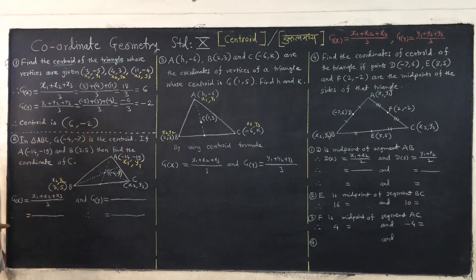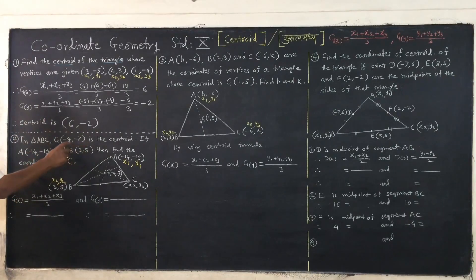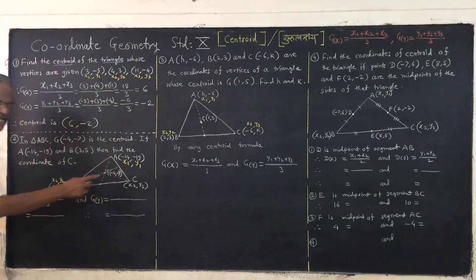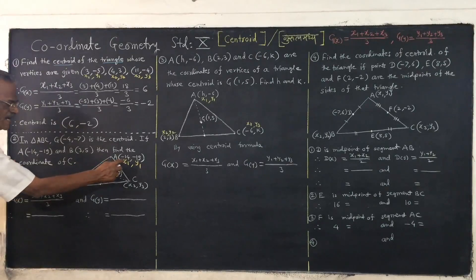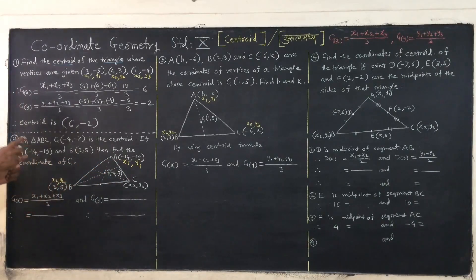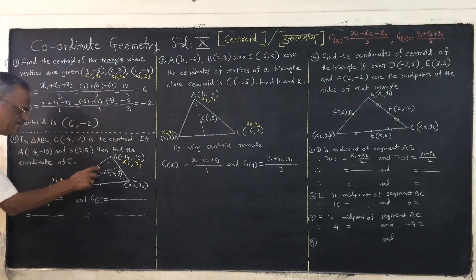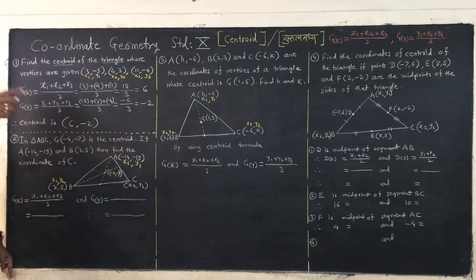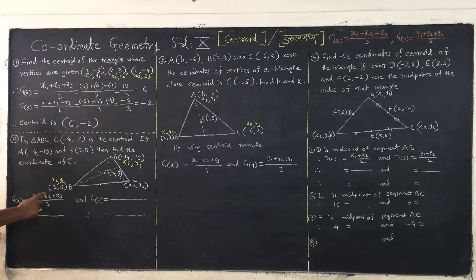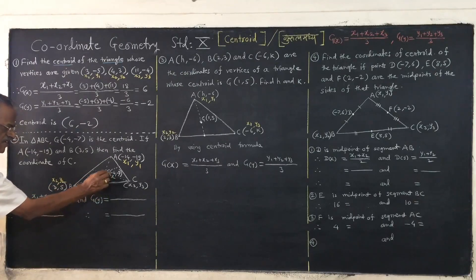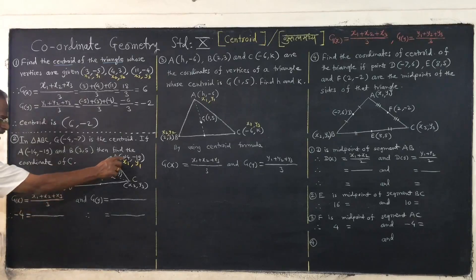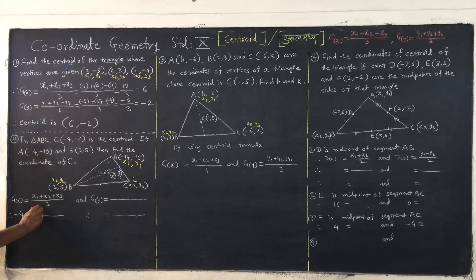Now the second, third, and fourth examples are very interesting and powerful. In this example, the centroid G of triangle ABC is given. The coordinates of A are given, coordinates of B are given, and coordinates of G the centroid are given. We need to calculate the coordinates of the third point C. Using the centroid formula: Gx equals x1 plus x2 plus x3 upon 3. The x-coordinate of G is minus 4, so: minus 4 equals minus 14 plus 3 plus x3, divided by 3.